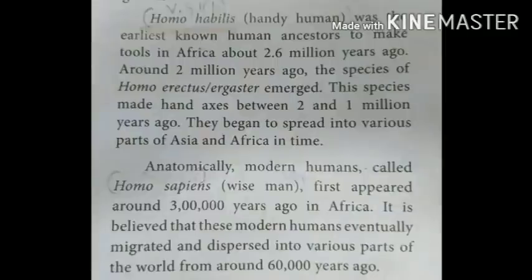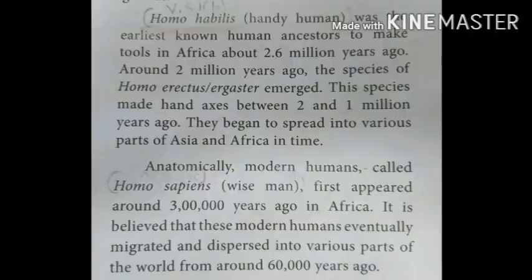Homo Habilis, meaning handy human, was the earliest known human ancestor to make tools in Africa, about 2.6 million years ago. Around 2 million years ago, the species of Homo Erectus or Ergaster emerged. These species made hand axes between 2 and 1 million years ago. They began to spread into various parts of Asia and Africa.